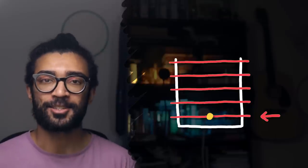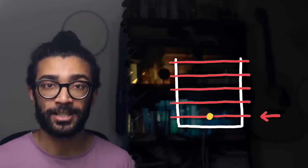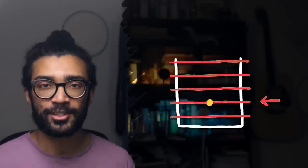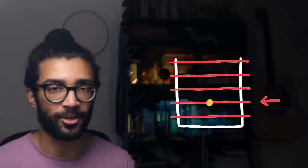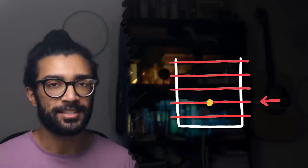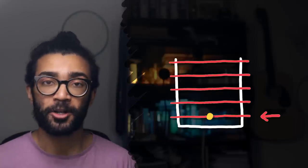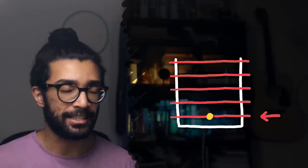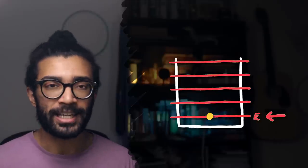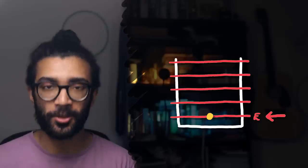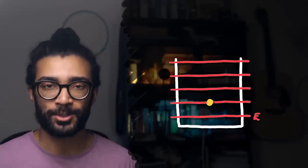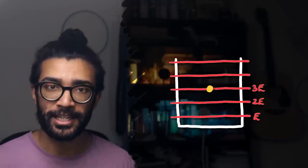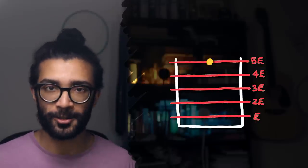We'll represent those specific amounts of energy that each particle can carry with these energy levels in this diagram. This energy level represents the smallest amount of energy that a particle is allowed to carry. This next one represents a slightly larger amount of energy that a particle is allowed to carry, and so on and so forth. Let's assume for simplicity that this lowest energy level corresponds to a particle carrying an energy E. Doesn't matter what E is, just as long as we know that it's a constant. And the next energy level, again for simplicity, corresponds to a particle carrying an energy 2E. And the next one is 3E, and 4E, and 5E, and so on.